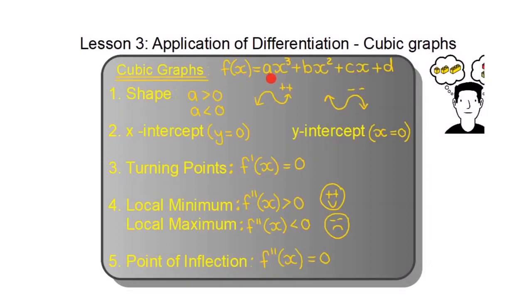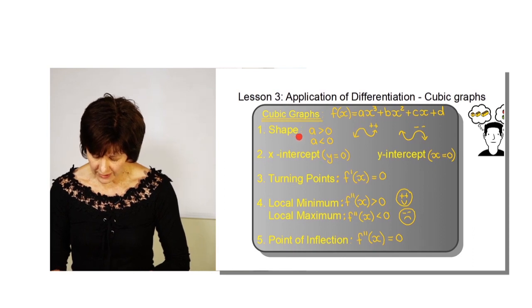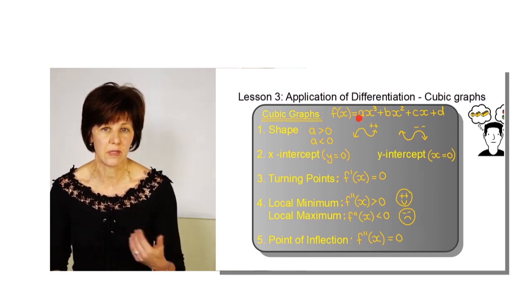What should you know about cubic graphs? The first thing is the shape. Cubic graphs can be written in the form Ax³ plus Bx² plus Cx plus D. B, C, and D can be zero, but there must be at least an x³. The shape is determined by the A value — the coefficient in front of the x³.